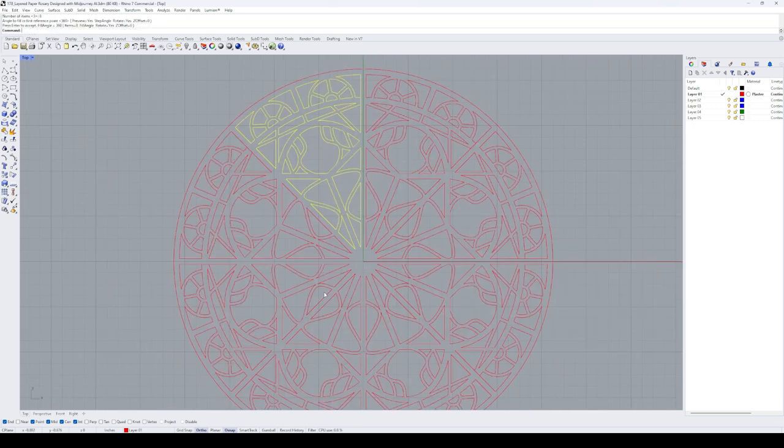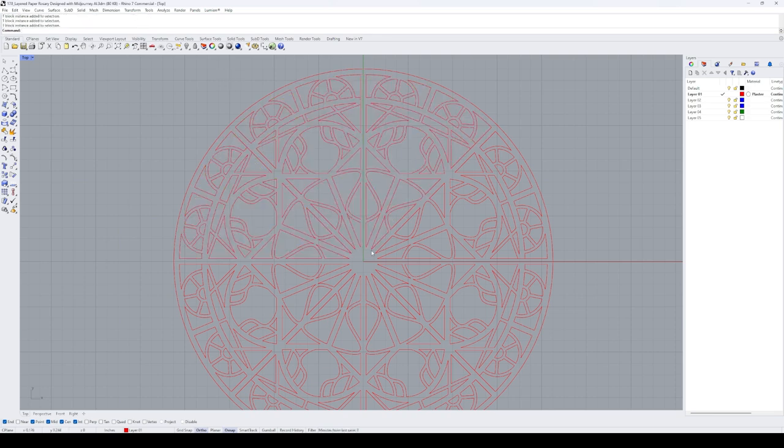We can use the radius array command and create copies of this block around the entire circle. That gives us the first layer of this project.